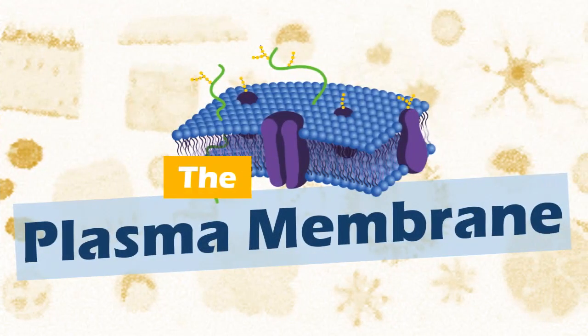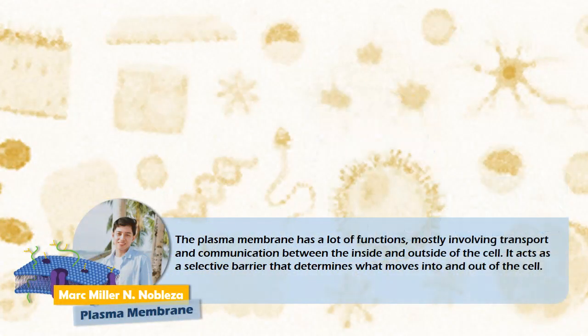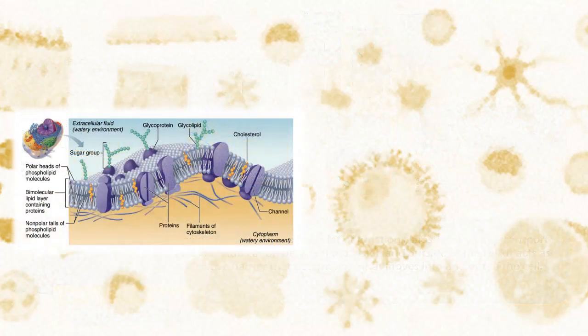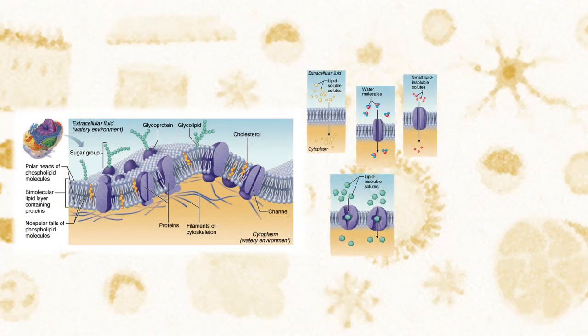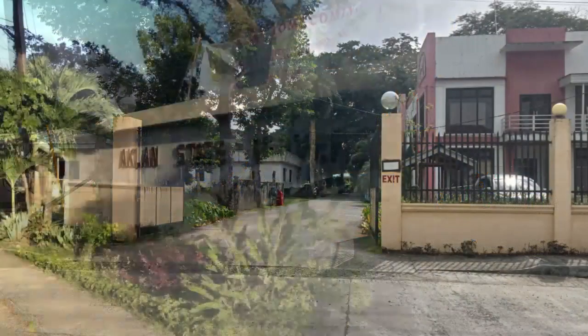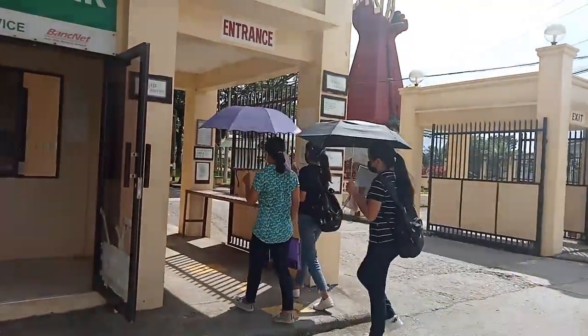The Cell Membrane, or Plasma Membrane. Moving to the next organelle, it is similar to monitoring the students through the gates, keeping peace and order from the external environment. The cell membrane has many functions, mostly involving transport and communication between the inside and outside of the cell, acting as a selective barrier to determine what moves into and out of the cell. Like the guards on campus, they control who comes in and out according to the university's protocols.